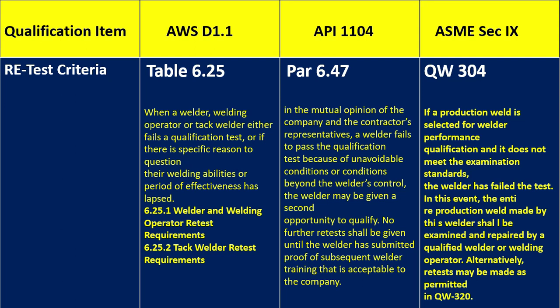For ASME Section 9, QW-304 states that if a production weld selected for welder performance qualification does not meet the examination standard, the welder has failed the test. In this event, the entire production weld made by that welder shall be examined and repaired by a qualified welder or welding operator. Alternatively, a retest per QW-320 shall be done.